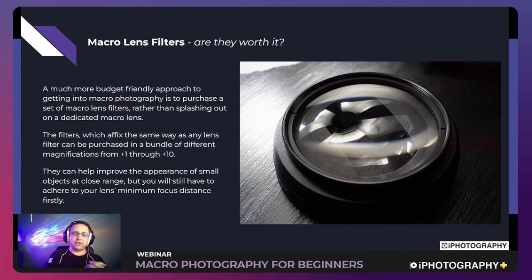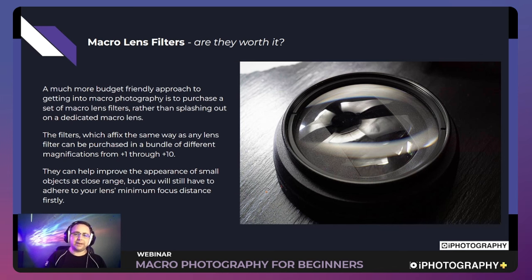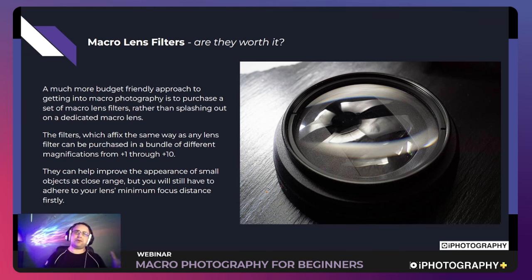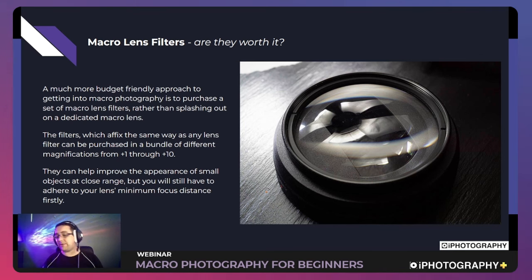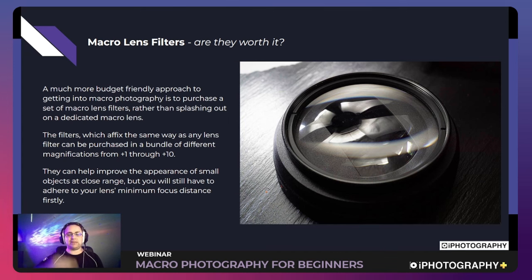Macro close-up filters screw onto the front of your lens just like an ND or graduated filter, and you can choose from a range of magnification levels from +1 to +10. The higher the number, the greater the magnification. The quality of the glass and optics determines how good the final image will be — very cheap filters will differ noticeably from slightly more expensive ones. It's a fun way to experiment without spending a lot.